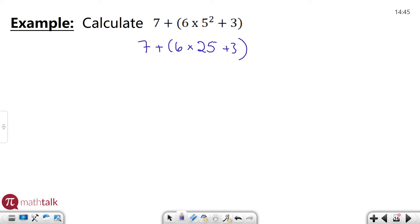So now our exponents are gone. We still have parentheses though, so we still need to take care of the parentheses. Six times 25 is going to be 150 plus three. I still have parentheses so I want to continue to take care of those. And 150 plus three is 153.